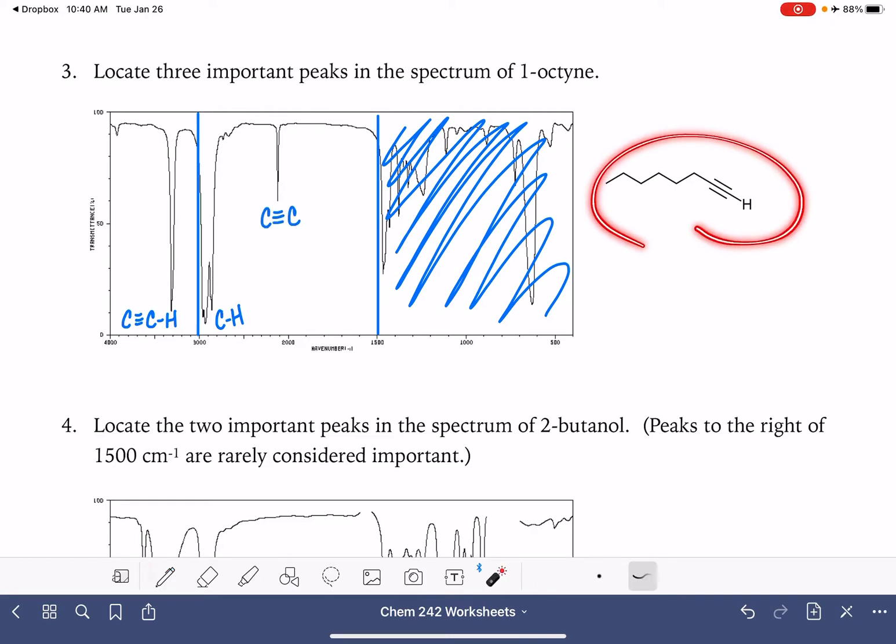If I didn't know that the molecule was an alkyne, how would I know that this is a triple bond versus a double bond? The triple bonds do tend to show up more in the center of this particular area, whereas the double bonds tend to kind of hug that 1500 line.